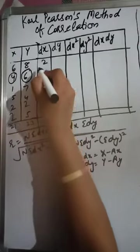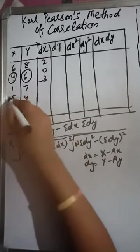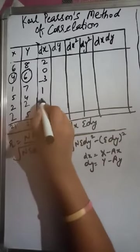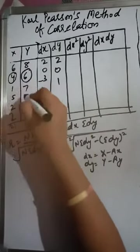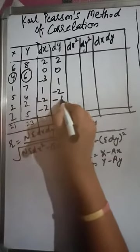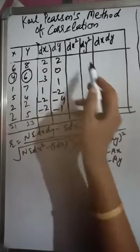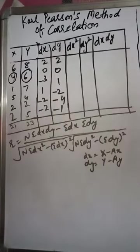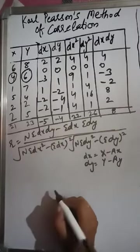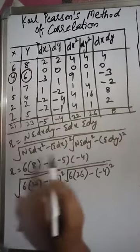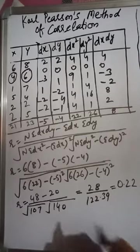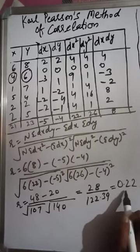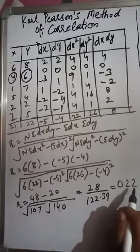We subtract the assumed mean from each observation to get dx: 6−4=2, 4−4=0, 1−4=−3, 5−4=1, 2−4=−2. Similarly for dy: 8−6=2, 6−6=0, 7−6=1, 4−6=−2, 2−6=−4, 5−6=−1. We then square each deviation and find the products dx·dy. After putting all values into the formula and solving, r = 0.22, which is again a very low degree of correlation between these variables.